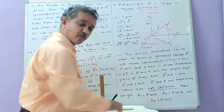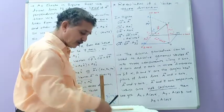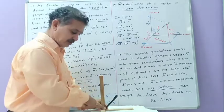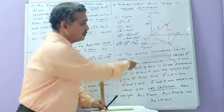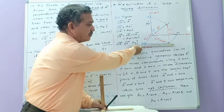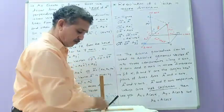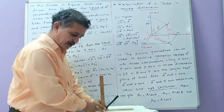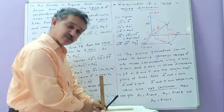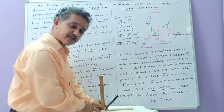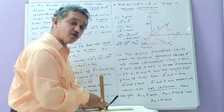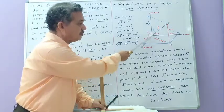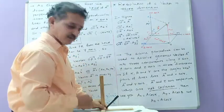From point Q, you draw another perpendicular line to the z-axis; it cuts at a point M on the z-axis. You measure the distance from O to M, put an arrow at M, and this gives the component along the z-axis — that is AzK. So vector OM is the z-component.